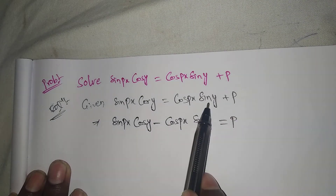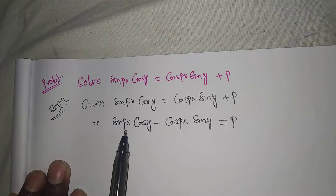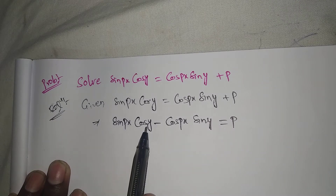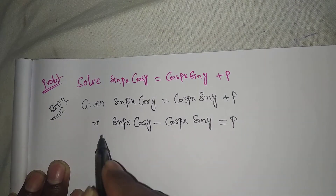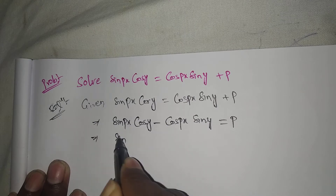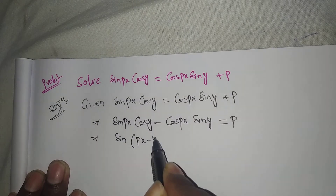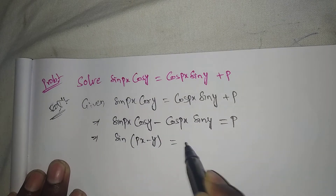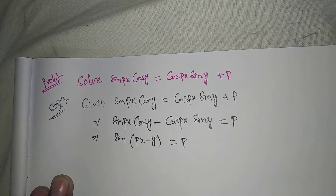On the left side, we can see that sin(a)cos(b) minus cos(a)sin(b) — applying this formula — gives sin(px minus y) = p.